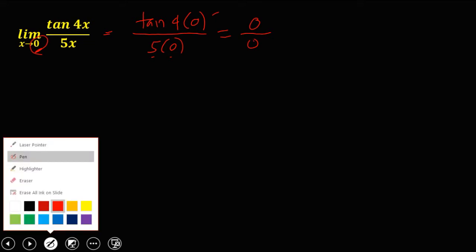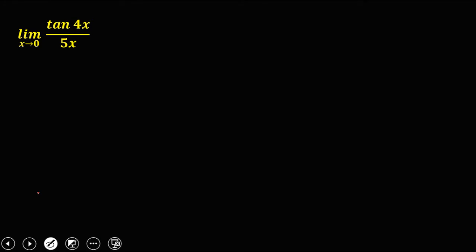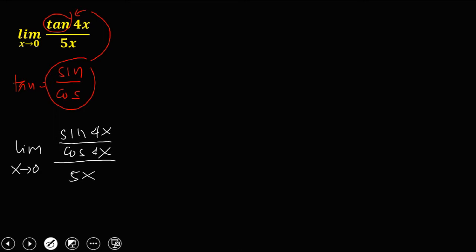So we're going to use an identity to solve for this limit because tangent is equal to sine over cosine. So we're going to use this equation to replace tangent. So this is now our new equation. We have the limit of sine 4x over cosine 4x all over 5x as x approaches 0.